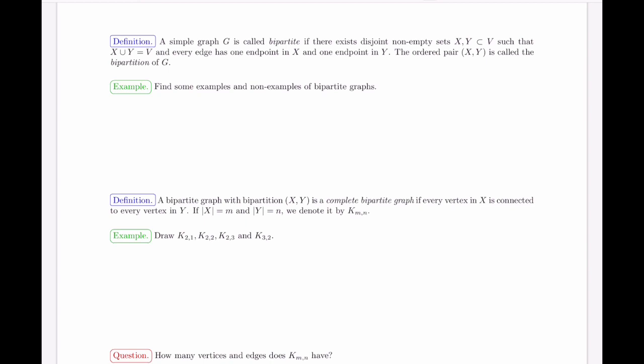A graph is bipartite if there are two non-empty sets, X and Y, that are subsets of the vertex set, so that their union gives us all the vertices, and every edge has one endpoint in X and one endpoint in Y. These sets X and Y are called a bipartition of the graph G.